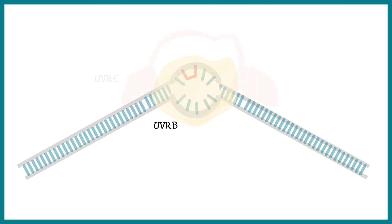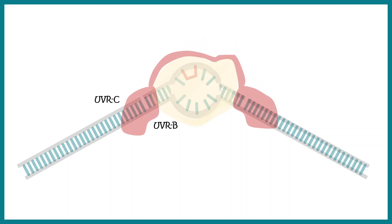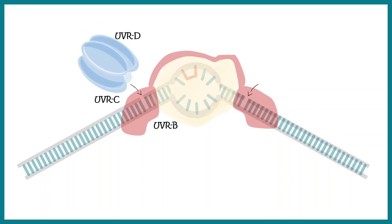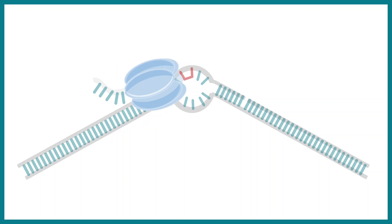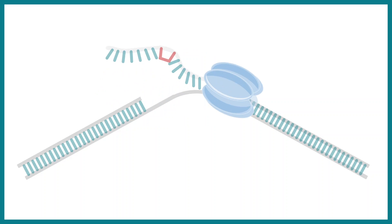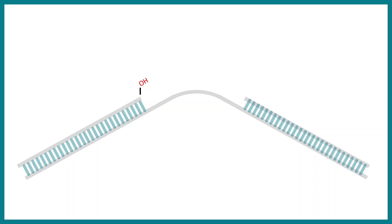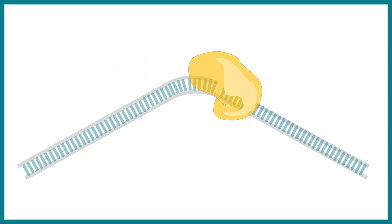After that, UvrC gets recruited to the site of distortion. UvrC leads to a cleavage at a particular portion which is slightly away from the site of damage. Then UvrD, which is a kind of helicase, gets recruited to this site and it would chop off this particular segment of the DNA. Ultimately a gap is generated after this process.